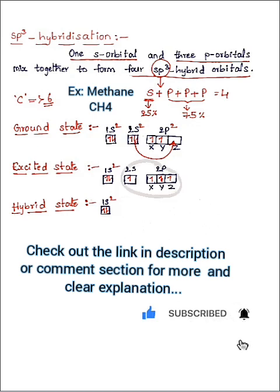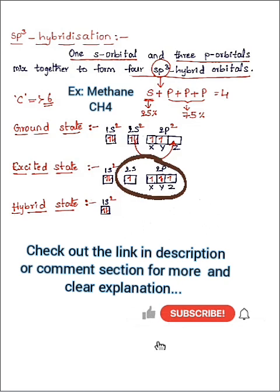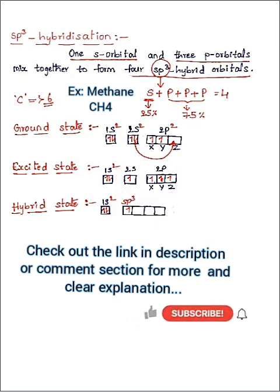The 1s orbital is already completed having two electrons. So this 2s orbital and three orbitals of 2p—they are x, y, z—mixed together or combined together to form four hybrid orbitals.